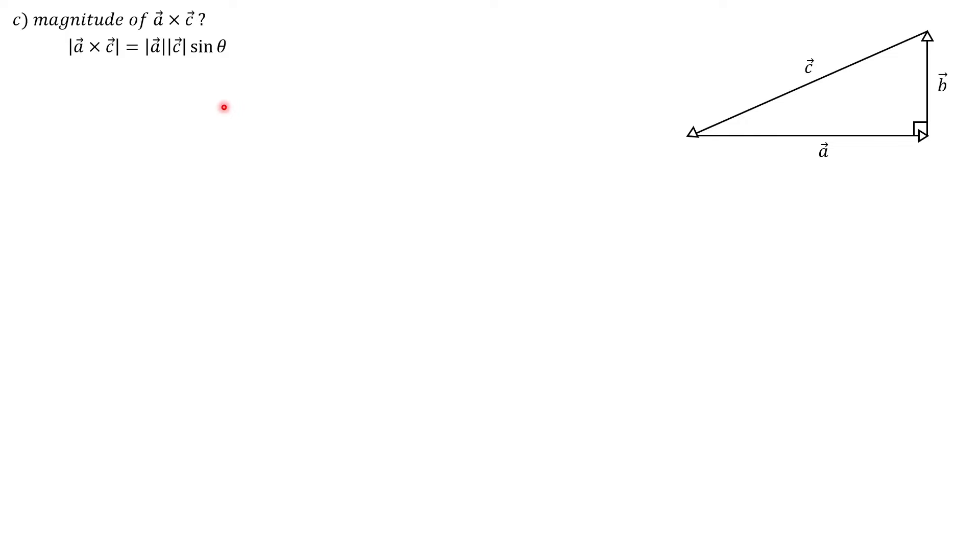Now back in part A, we did this calculation between vectors A and B, and since we have a right triangle here that connects all three vectors, we can actually write vector C in terms of vectors A and B. So if we take a look at the diagram here, starting at the tail of vector C, we can go negative B and negative A to get to the head of vector C.